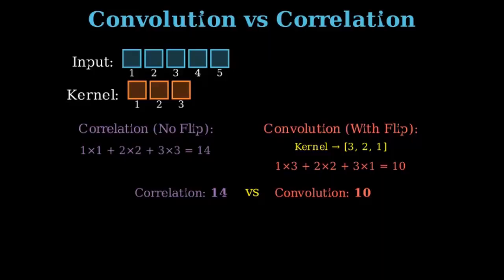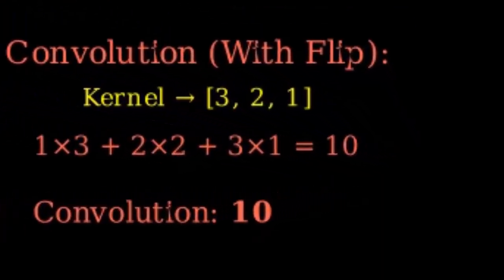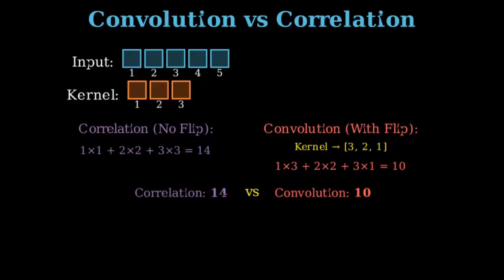So the 1, 2, 3 kernel is reversed to become 3, 2, 1. Now the multiplication uses the flipped kernel: 1 times 3 plus 2 times 2 plus 3 times 1, this result is 10. You can see that the flip changes the final value.